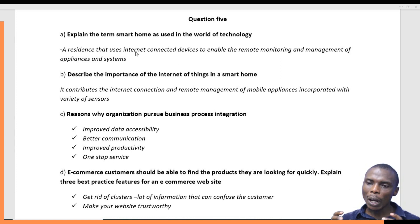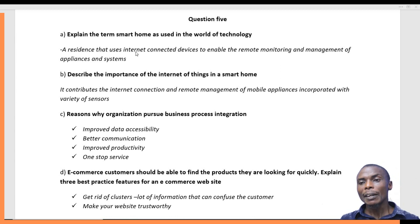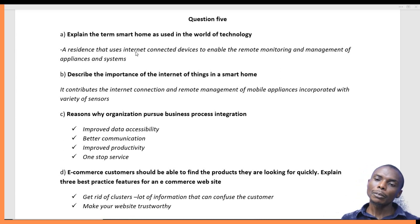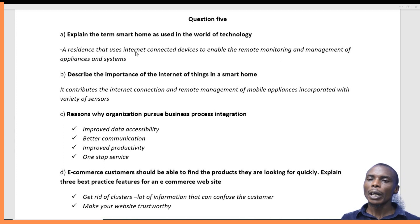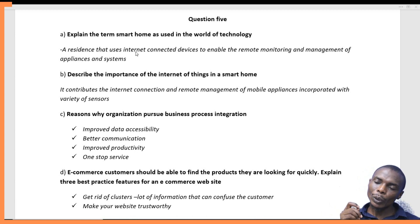Having one center of information leads to improved productivity. If you have improved data accessibility and better communication, then production itself will be fast and that will lead to high profits within an organization. Additionally, we can have what we call one-stop service — where instead of different services across different departments, you get everything you need from one interface.